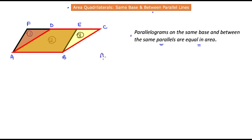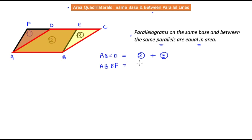The area of parallelogram ABCD equals the trapezium area (region 2) plus triangle area 3. Likewise, the area of parallelogram ABEF equals region 2 plus triangle 1. So if we can prove that triangle 1 equals triangle 3 in area, then we can conclude that the two parallelograms have equal area.